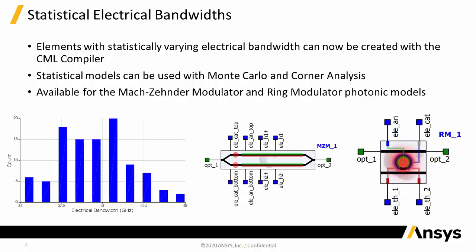This feature is available for the Mach-Zehnder and ring modulator photonic models. Examples of elements using these models that include a statistical electrical bandwidth can be found in the LoomFoundry template compact model library included with the CMEL compiler.